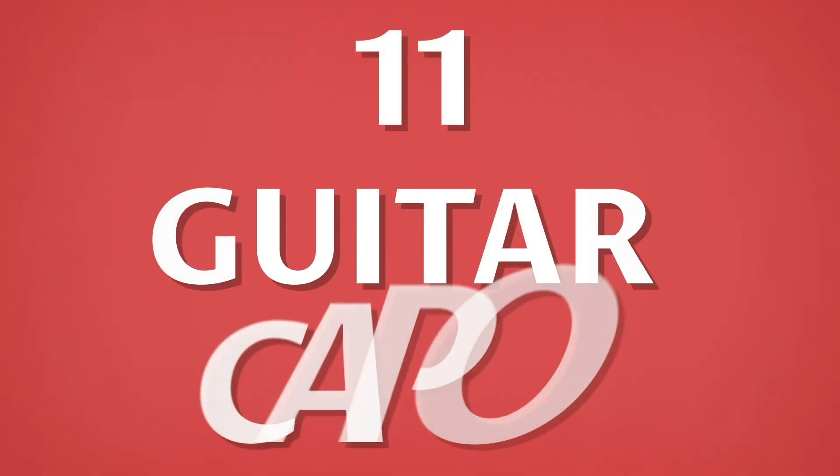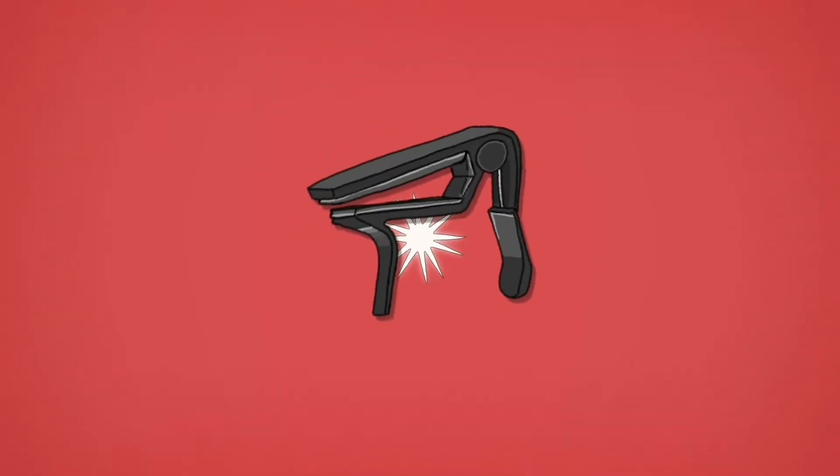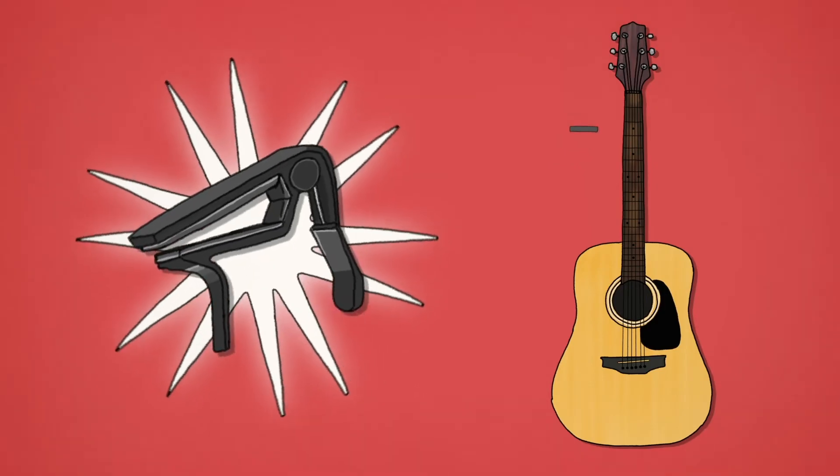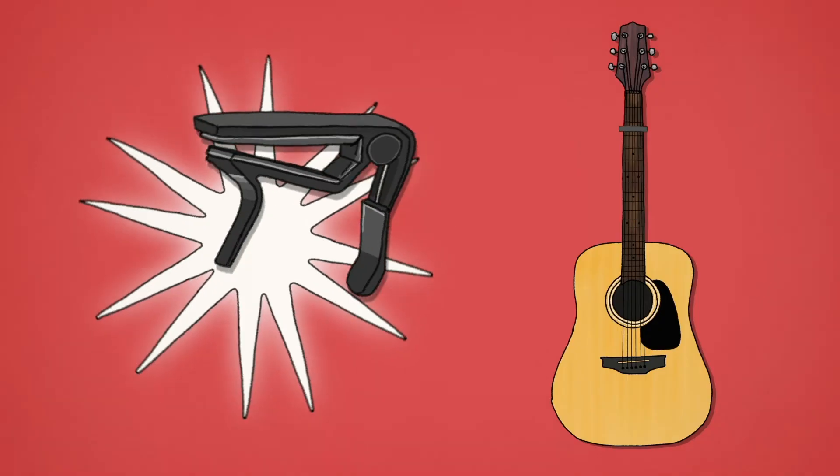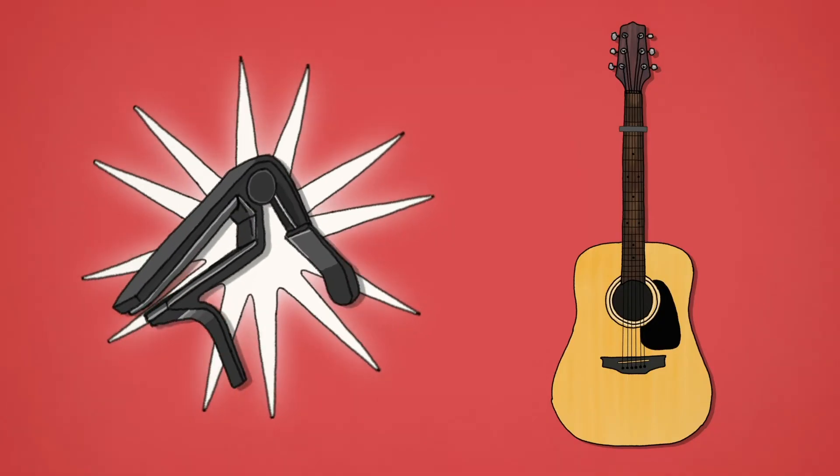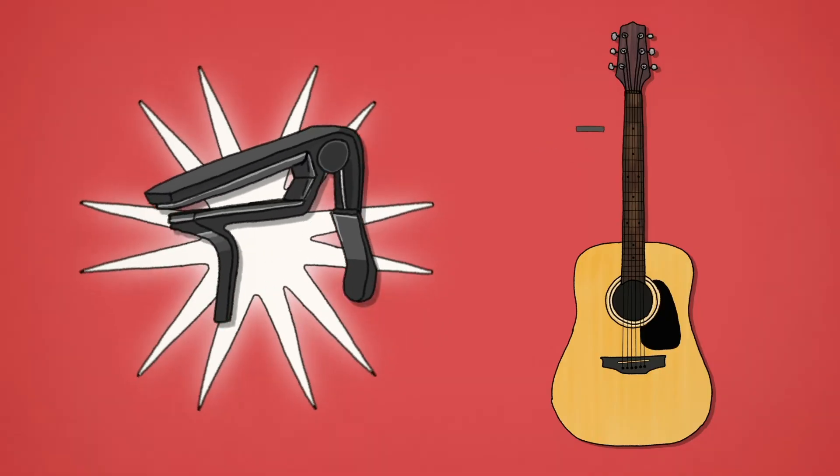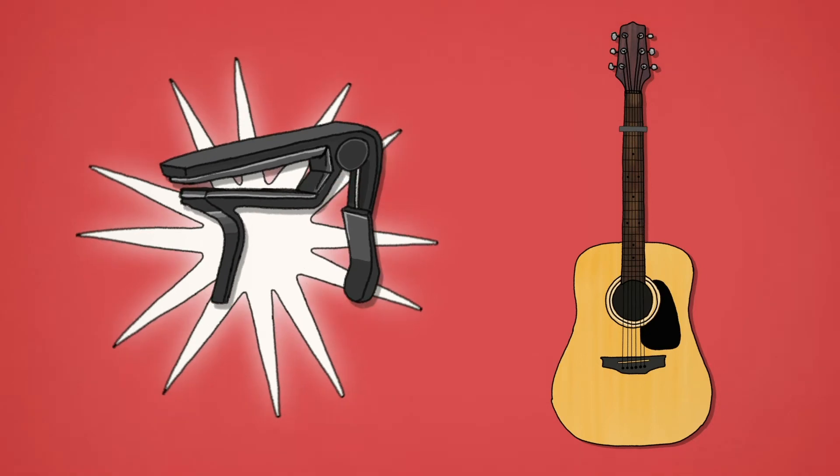Number 11: Guitar capo. A guitar capo is a small clamp-like device which a guitar player will attach to various points of the neck, and it allows them to play in different keys more easily. Many teachers encourage beginner students to use a capo because it means the student can play more of their favorite songs, having only learned a few basic chord shapes.